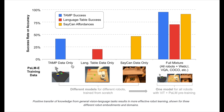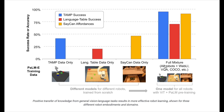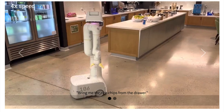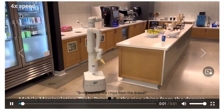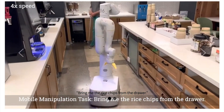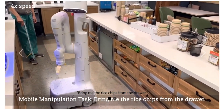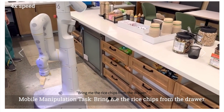This chart shows the advantage of combining all the different modalities together. TAMP data only — TAMP means task and motion planning — versus large language model data only. When you combine all the different modalities together, you get increased performance for each one of them. Here's a demonstration: they ask the robot to bring a bag of chips. This is at 4x speed, so the robot is still pretty slow, but it will improve over time.